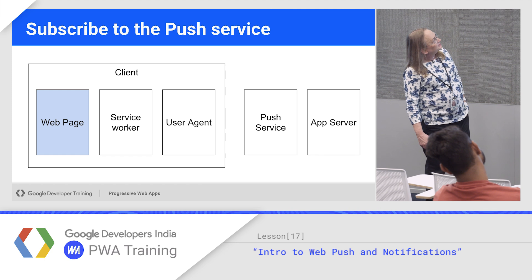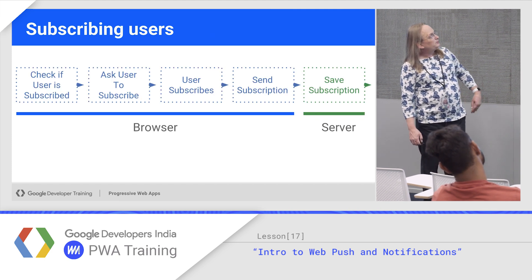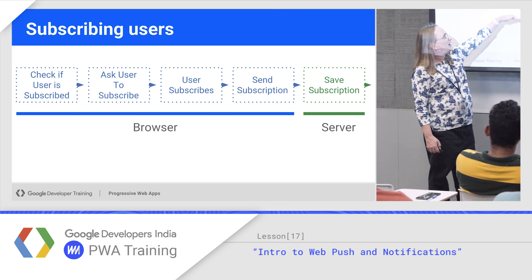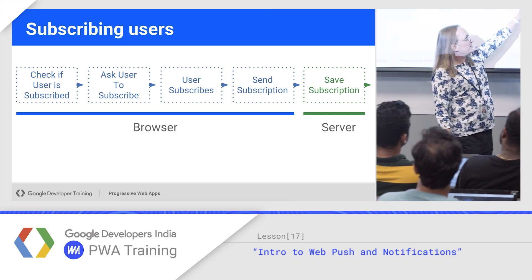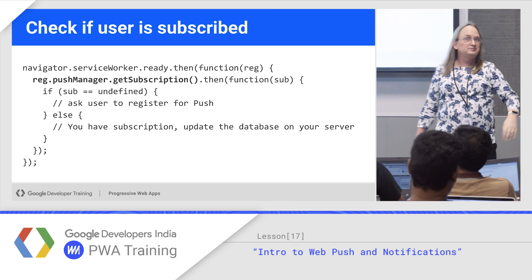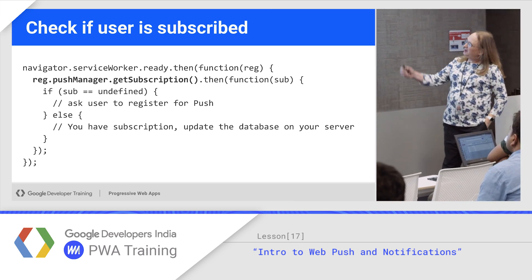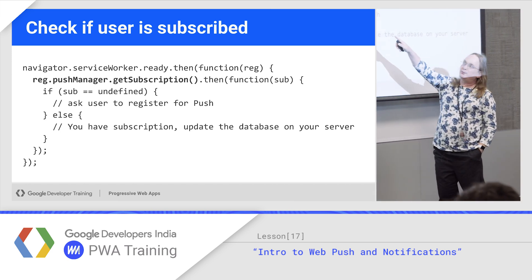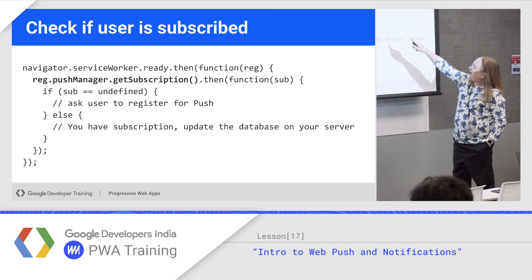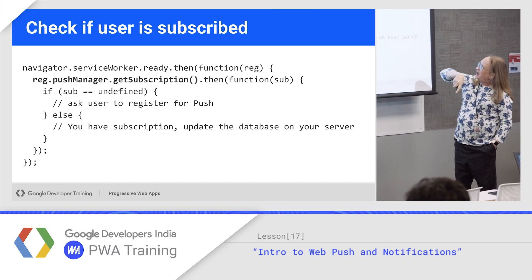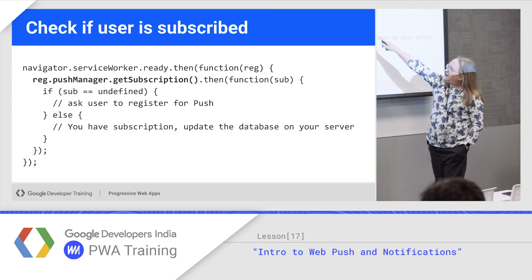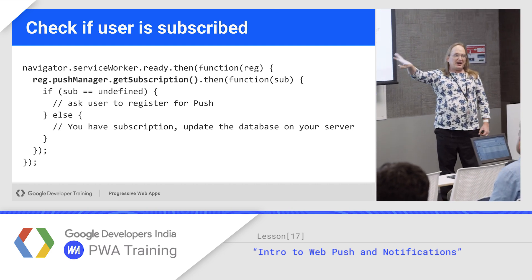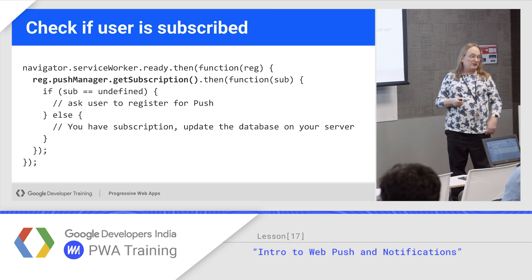The push API flow from the page: first check if you have a subscription, then ask the user to subscribe, they say yes, you send the data to the server and the server hangs onto it. To create the subscription, the service worker registration has a push manager object. You ask that for the subscription, and because it returns a promise, if there's no subscription already you ask the user; otherwise you already have the subscription. Send that data to your back end, as some details may have changed every time you ask.